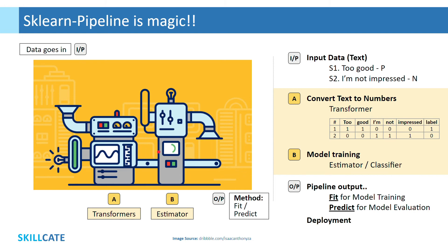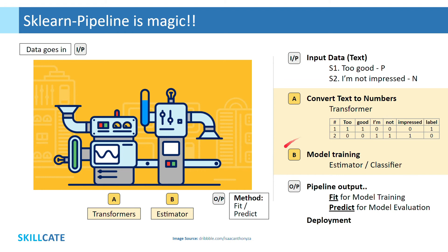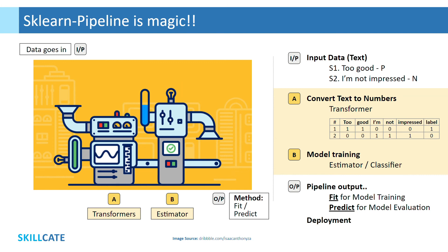The pipeline takes training data as input and has methods fit, predict, and score, just like any other estimator, for producing outputs. So if the input data is text, component A of our pipeline — which is the series of transformations — shall transform this data to numerical representation. Then component B shall fit a model on this training data and make predictions on unseen data using methods fit and predict respectively. Just as we serialize a trained model as a pickle file for later use, here we shall directly serialize the pipeline as a pickle.